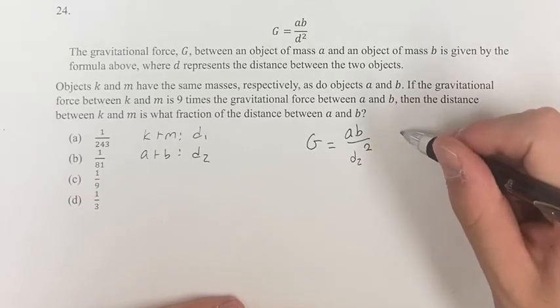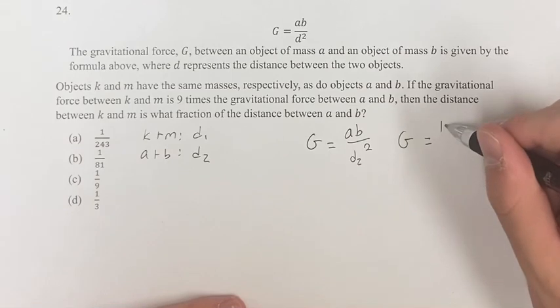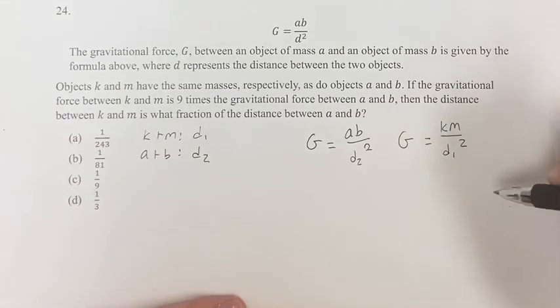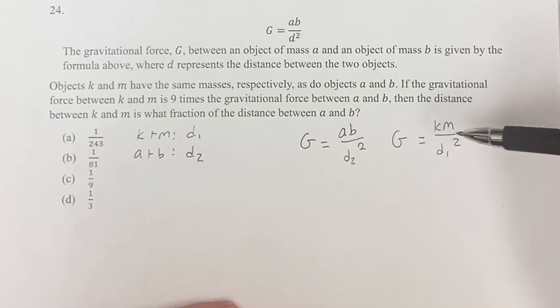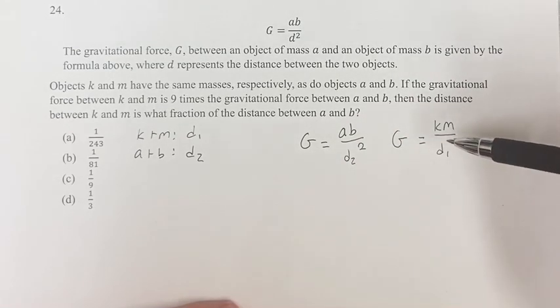And for K and M, we multiply the masses up top, so it's just KM over D1 squared. Right, so these are the two formulas for our gravitational forces.